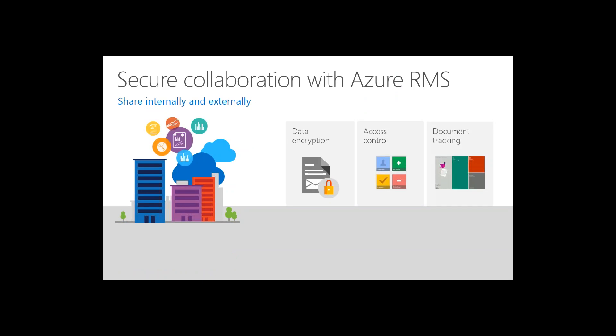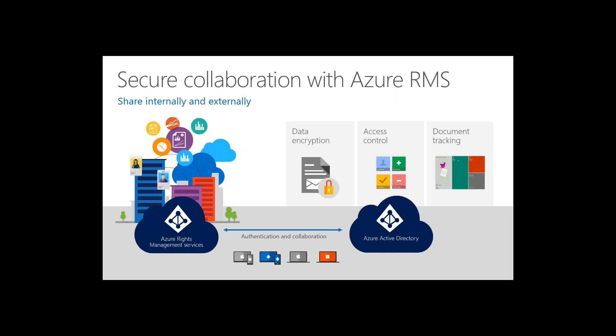Azure Rights Management works by taking a file, encrypting it, and embedding access control or permissions inside the file so permissions travel with the document regardless of the file system. It also provides a phone-home tracking ability so you can see who has opened or closed the document, successful and unsuccessful access attempts. All of this is controlled using the identities already in your organization through Azure Active Directory, which integrates with your existing on-premises directory.